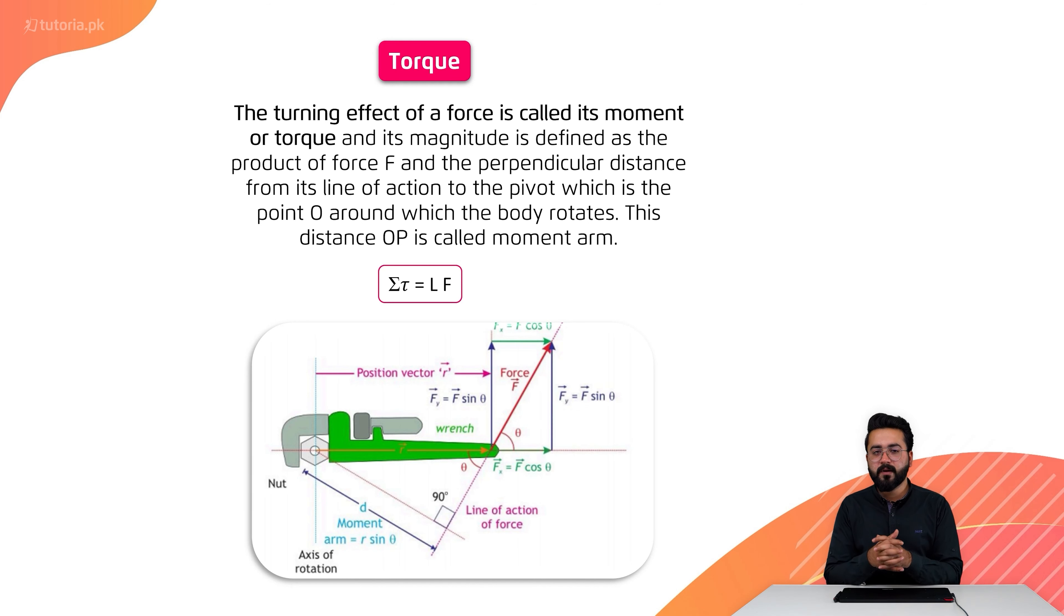We have an example - opening a nut with a wrench. For the wrench, the distance is the length we measure. The point of the axis is where we apply force. This force and distance is what produces the torque in our body.